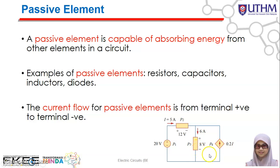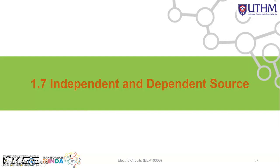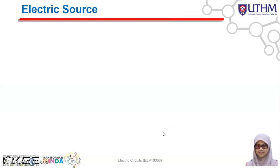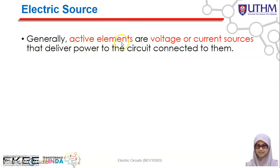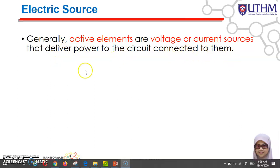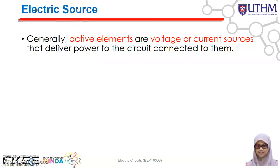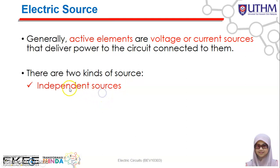Now we move to the last subtopic: independent and dependent sources. Generally, active elements are voltage or current sources that deliver power to the circuit connected to them. The electric source, whether a voltage source or a current source, is considered an active element. There are two kinds of sources: independent sources and dependent sources.